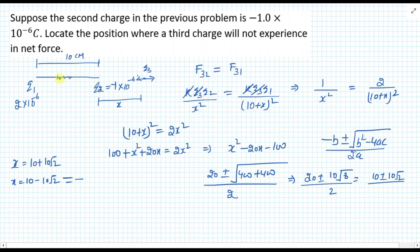If x is negative, then this means that Q3 has come before Q2. Now we have to place the position of Q3 in the right hand side of Q2, but because of this it will come to the left side. So this answer will not be considered. So the answer that we will consider is 10 plus 10 root 2.